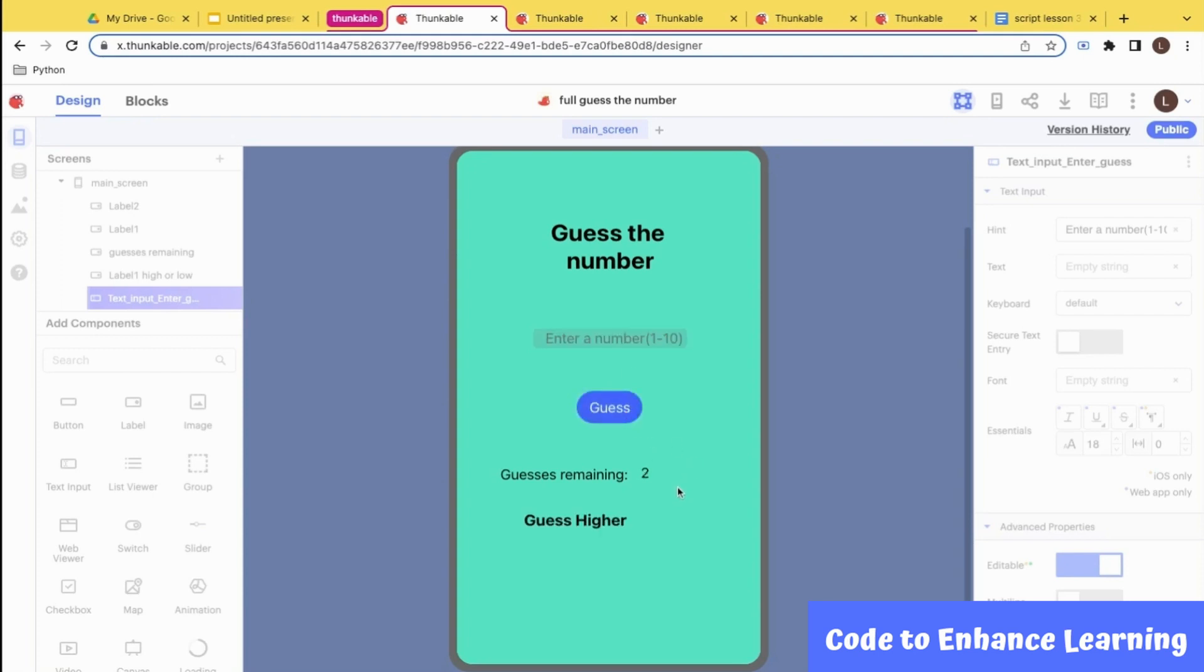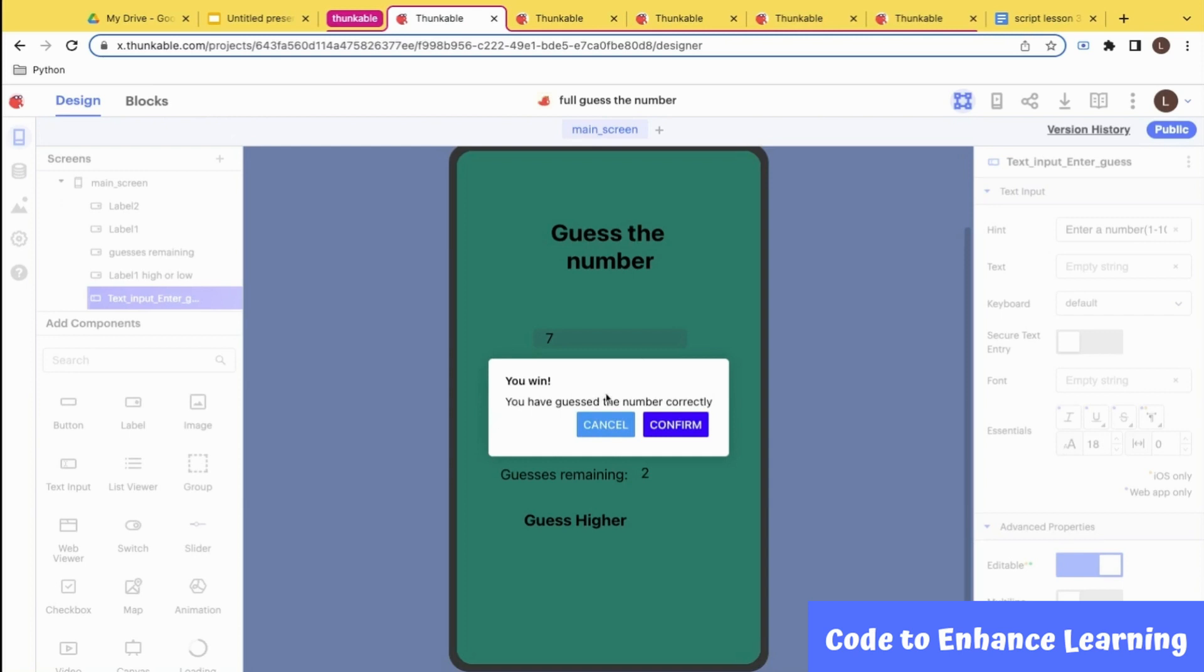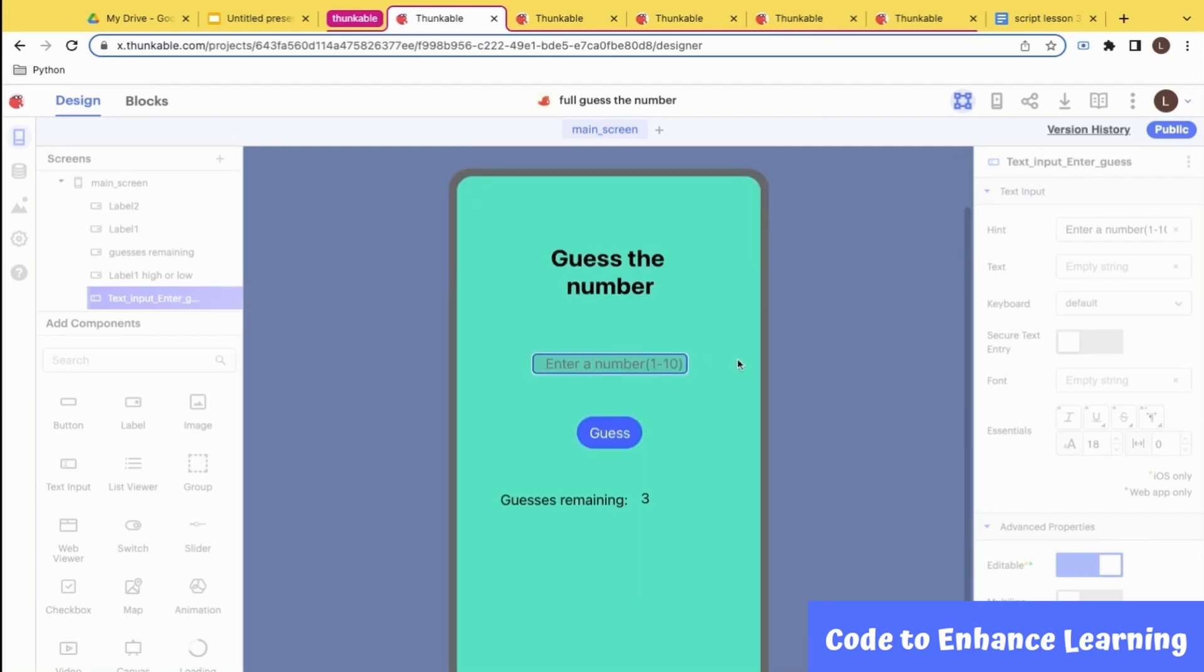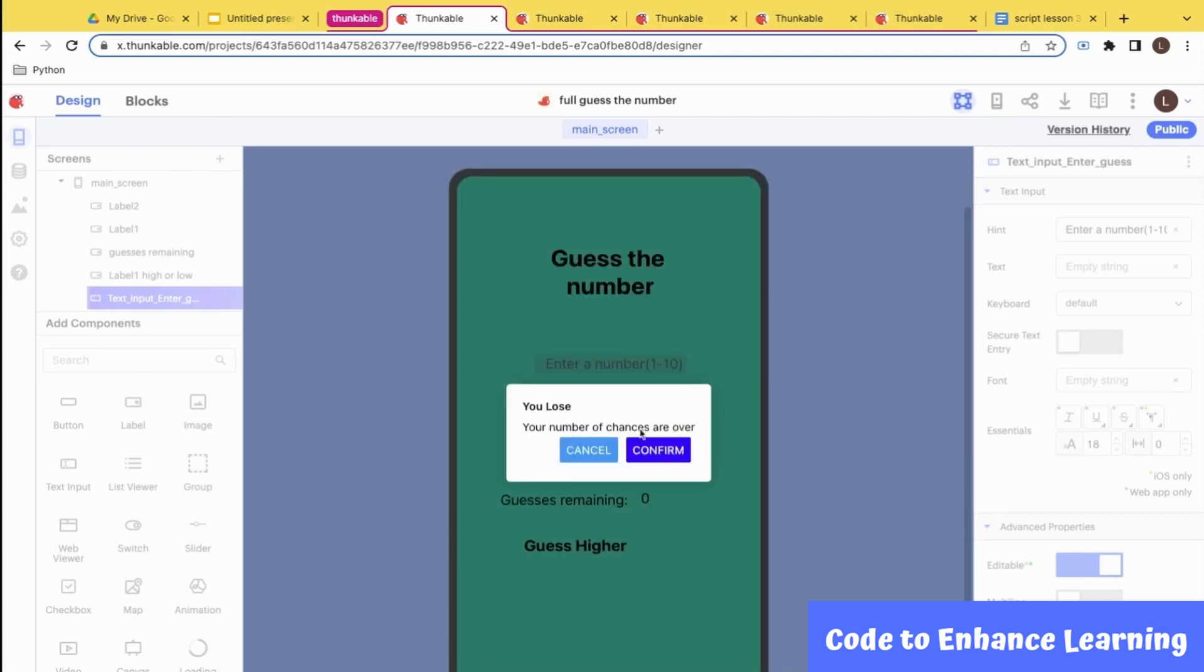It tells me to guess higher, so I am going to guess the number 7. It seems like I have gotten the correct number, so let us try again. Okay, I am going to start off with the number 3. It tells me to guess higher. Now how is this app going to help the player to compare numbers better?